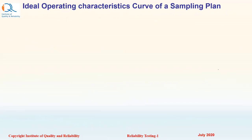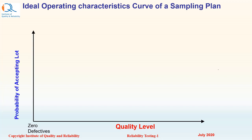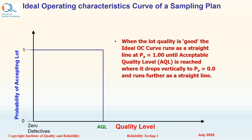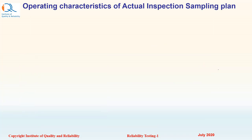Let us now understand concepts of operating characteristic curve or OC curve. We will begin with the ideal operating characteristic curve of a sampling plan for inspection. On the x-axis of the OC curve, we have quality level — on the left side, perfect quality or zero defective. On the y-axis, we have probability of accepting the lot based on our sampling, from zero to one. The ideal OC curve would have probability of acceptance of one up to AQL and then drop down to zero. Note that alpha and beta risks both are zero for an ideal OC curve, but we cannot have the ideal situation in real life.